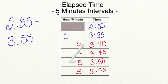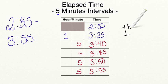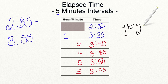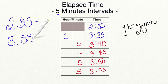We start with our hours: we have one hour. Now we add our minutes: 5, 10, 15, 20 — that's 20 minutes. The elapsed time between 2:35 and 3:55 is one hour and 20 minutes.